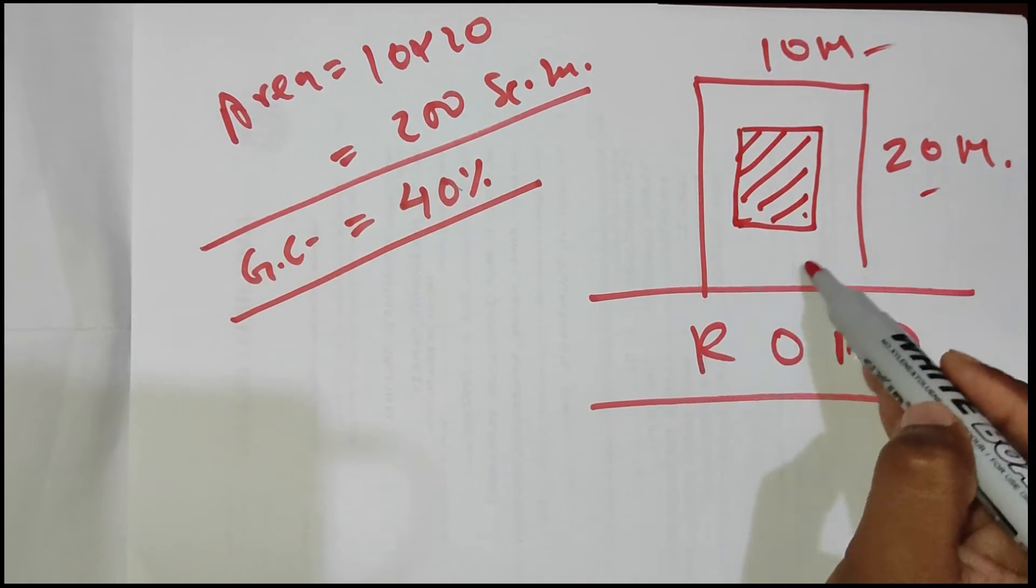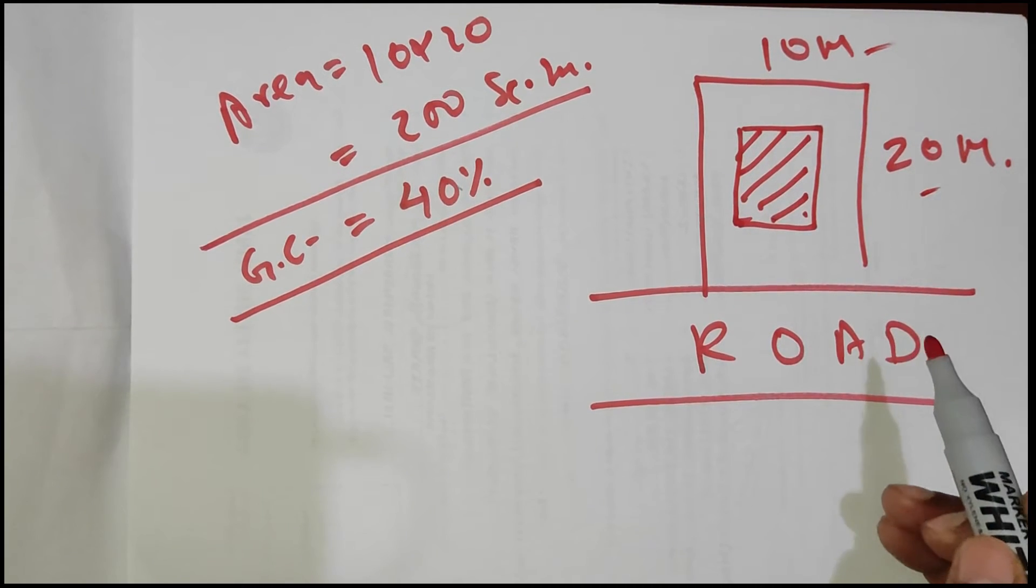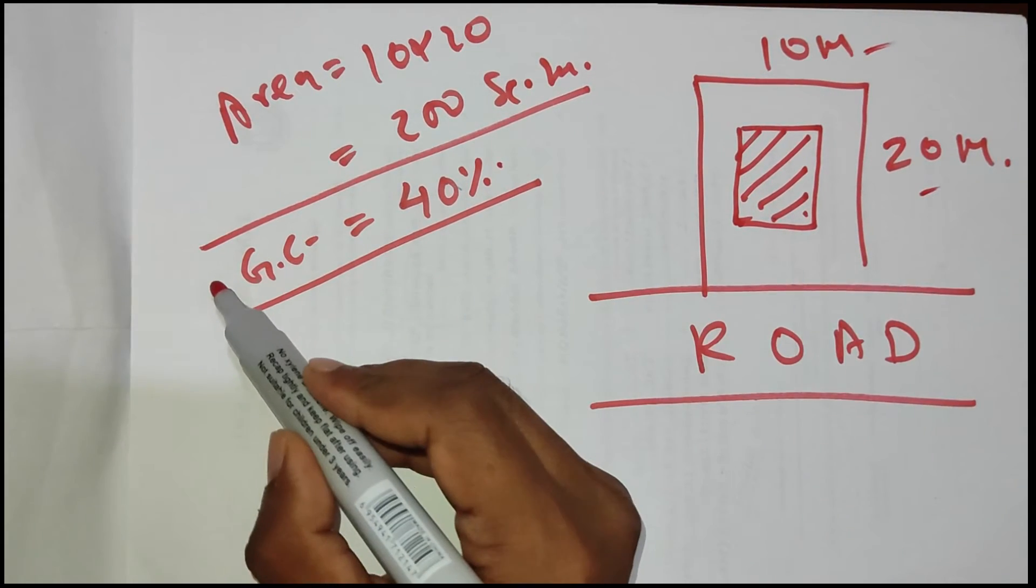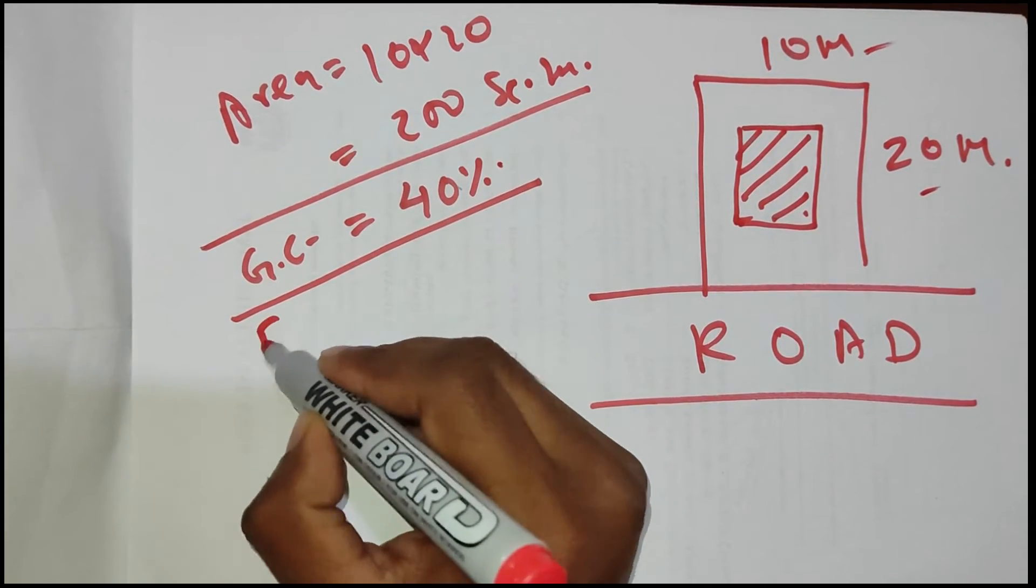The remaining area we have to leave out. We can't construct any permanent structure there. This data you have to refer from the bylaws. Now coming to number two, that is FAR.